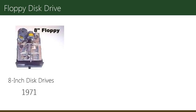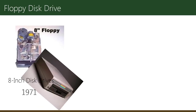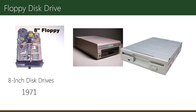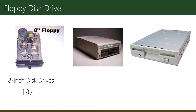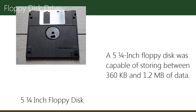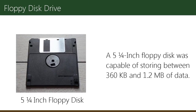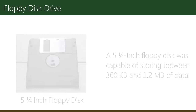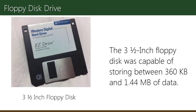Although disk drives were first made available in 1971, the first widely used drives were 5.25-inch floppy disk drives, which were later replaced with 3.5-inch floppy disk drives. A 5.25-inch floppy disk was capable of storing between 360 KB and 1.2 MB of data.